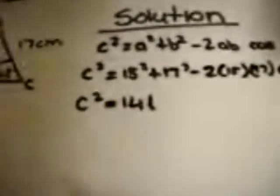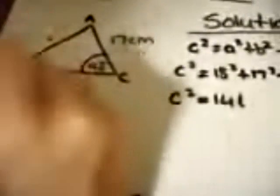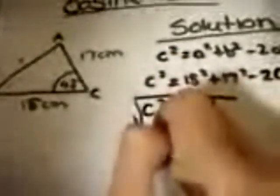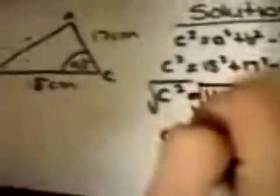In order to get length C on its own, we must square root this value. So we get C equals the square root of 141.